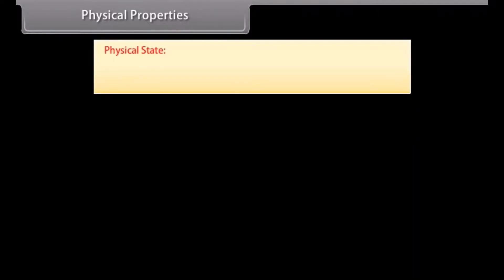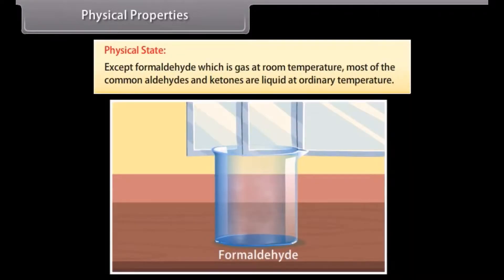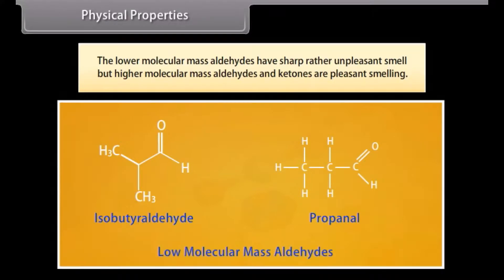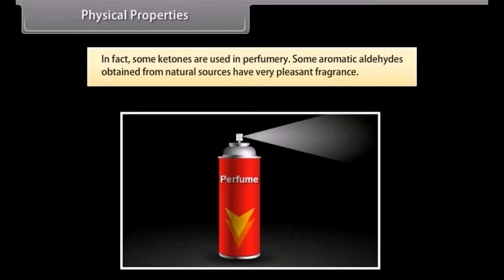Physical state. Except for formaldehyde, which is a gas at room temperature, most common aldehydes and ketones are liquids at ordinary temperature. The lower molecular mass aldehydes have a sharp, rather unpleasant smell, but higher molecular mass aldehydes and ketones are pleasant smelling. In fact, some ketones are useful in perfumery, and some aromatic aldehydes obtained from natural sources have a very pleasant fragrance.